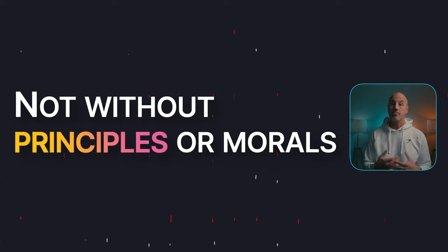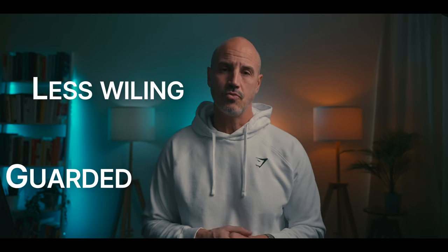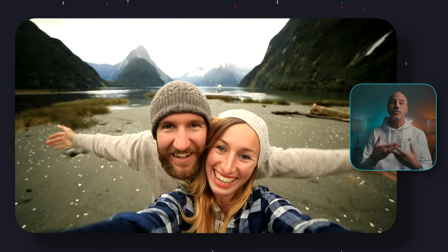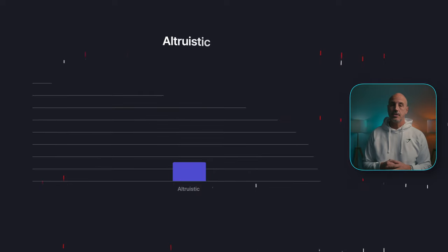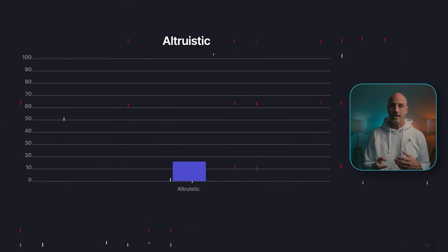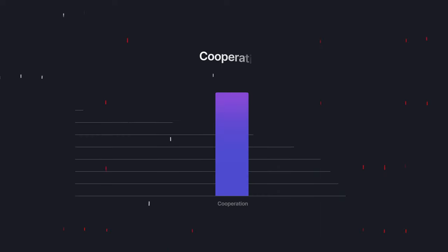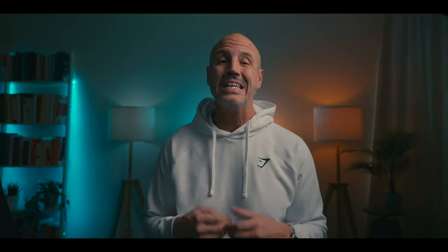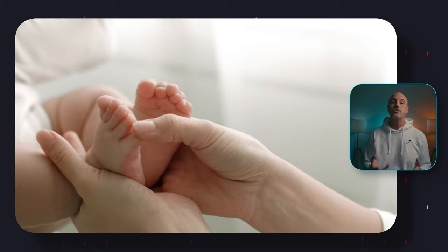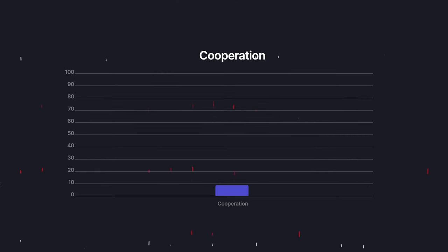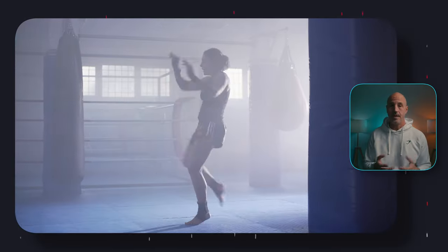People with low morality scores are not without principle or morals, but they are more guarded and less willing to reveal the whole truth. Altruistic people find helping others rewarding and are generally willing to assist those in need. Those who are not altruistic do not particularly like helping those in need — for them, a request for help feels like an imposition. Individuals who score high on cooperation dislike confrontations and are willing to compromise or deny their own needs to get along with others. Those who score low are more likely to intimidate others to get their way.